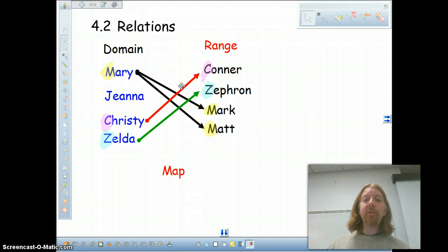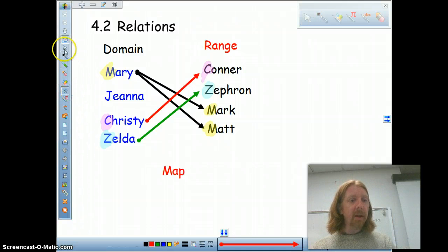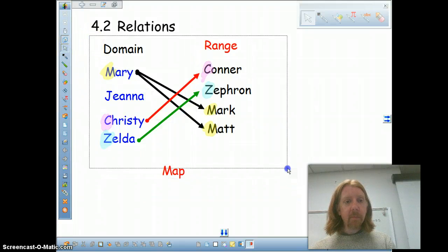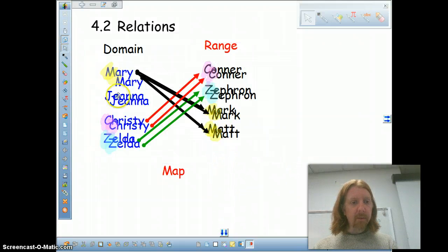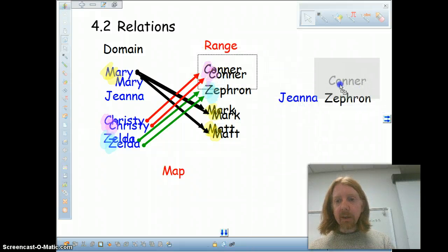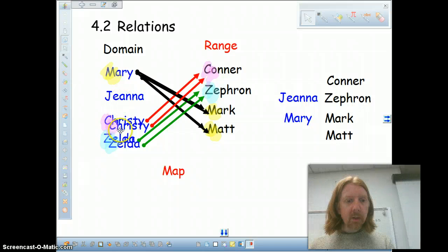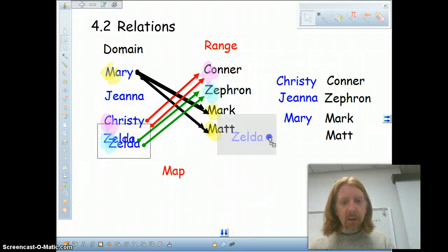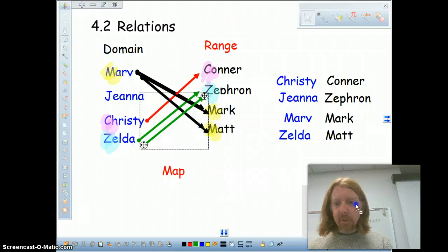Where we're taking ideas from one and we're using an arrow to literally express how they're paired together. Now, there are other ways we can show this data. Another one that we might use is called a T-table. So, if I were to do the same thing again, let me grab this collection of names. Let's grab my collection of names. Copy, paste. Let's bring them over here. So, Gina, Zephyrin, Connor, Mark, and Matt, Mary, Christy, Zelda, there we go. And that's everybody.